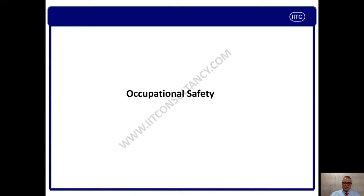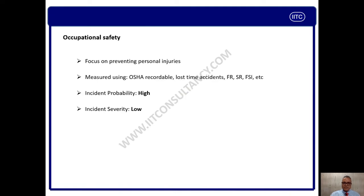Now the basic thing we need to understand is the difference between occupational safety and process safety. Occupational safety focuses mainly on preventing personal injuries — leg injury, finger injury, hand injury, face injury, eye injury, and any body part injuries. This occupational safety can be measured as per the OSHA standard in LTI, loss time injuries or loss time accidents; FR, frequency rate; SR, severity rate; FSI, frequency severity index; etc.